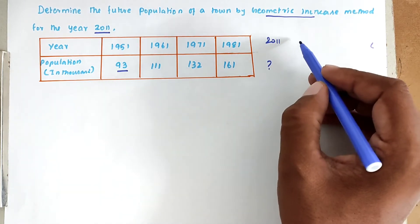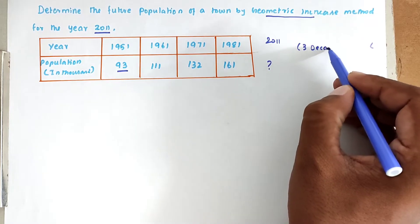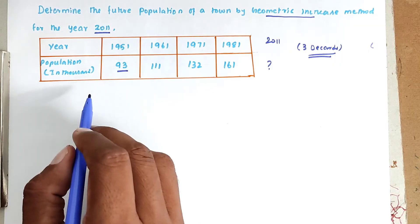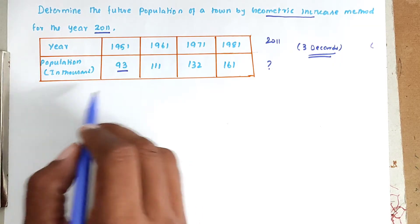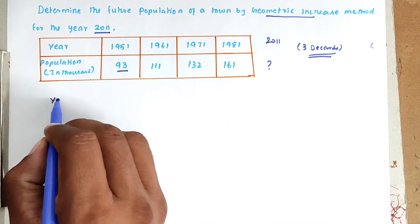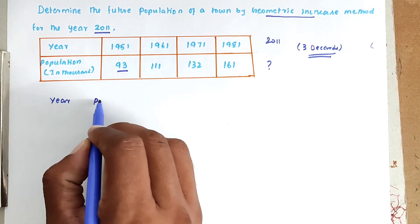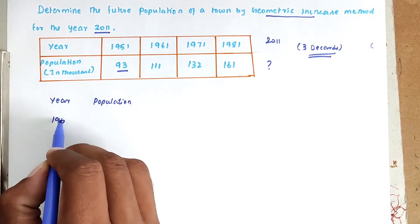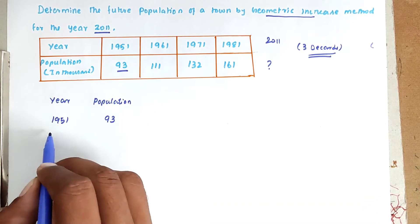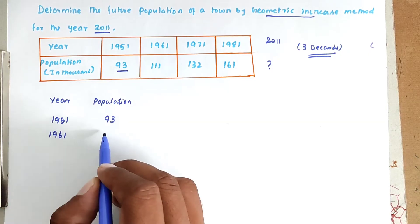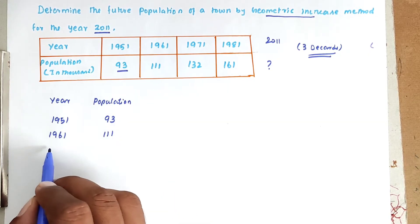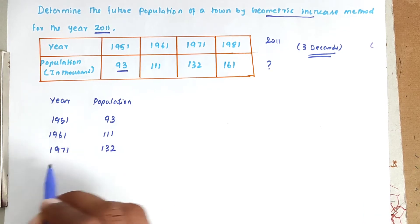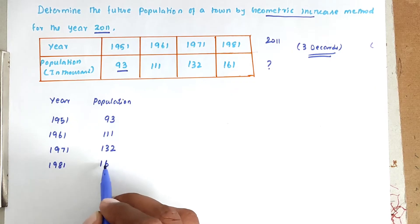There are three decades between 1981 and 2011. We can find out the geometric mean for the past growth rates. Setting up the table: year 1951 with population 93,000; year 1961 with population 1,11,000; year 1971 with population 1,32,000; year 1981 with population 1,61,000.